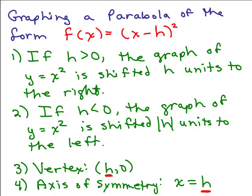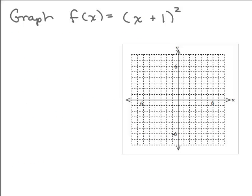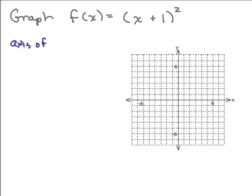Now let's just graph one more. Graph f of x equals x plus 1 squared. You can make a table or you could think of just shifting the graph. Put the video on pause and try that on your own. Here's how I do it. I figure out the axis of symmetry and the vertex right away.